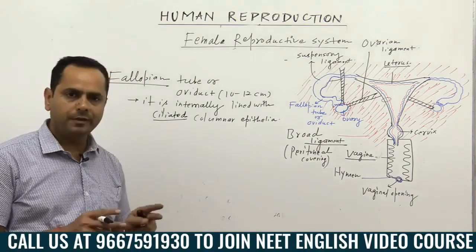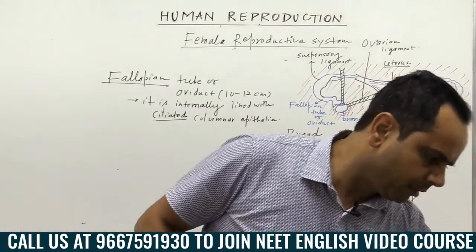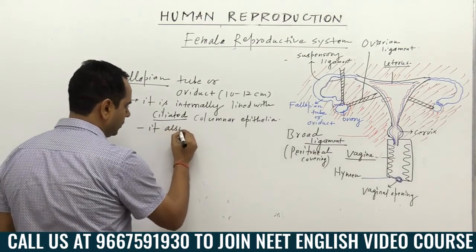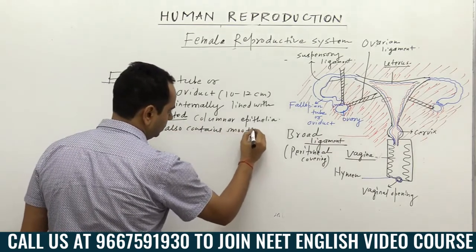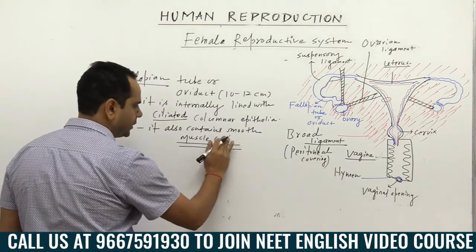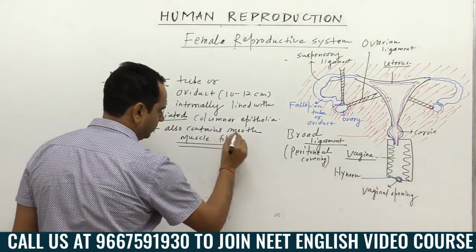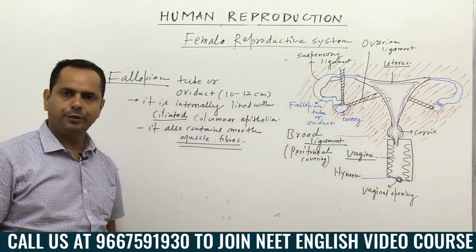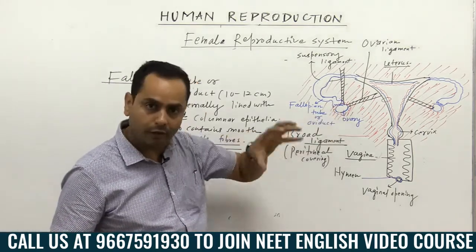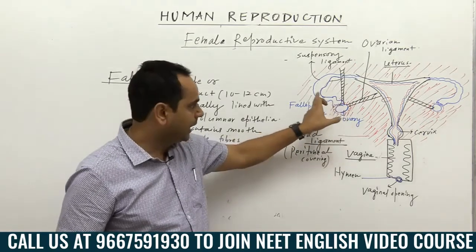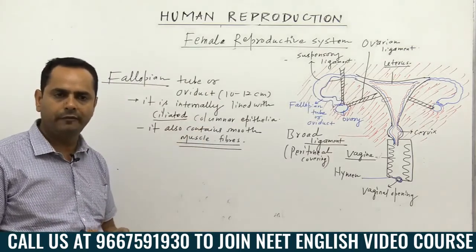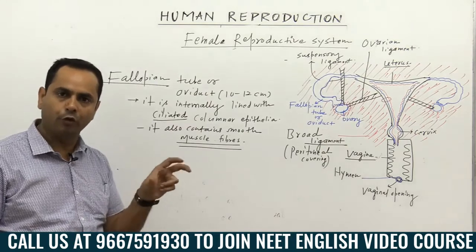The fallopian tube is lined with ciliated columnar epithelium and also contains smooth muscle fibers. The movement of the fallopian tube and this ciliary action, along with uterine contraction, play a very important role when the ovum comes from the ovary into the fallopian tube. These cilia and muscles play a very important role in the movement of the ovum through the duct of the fallopian tube.